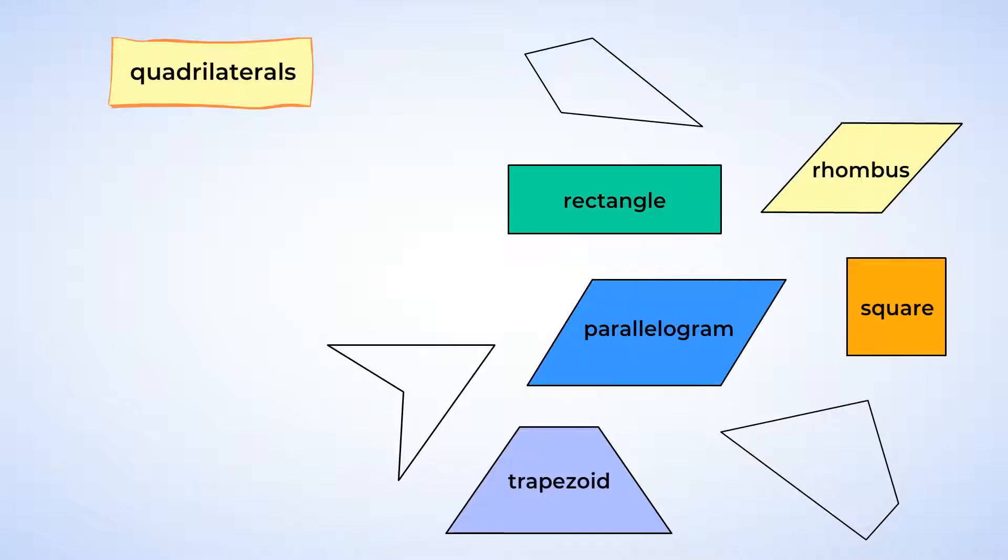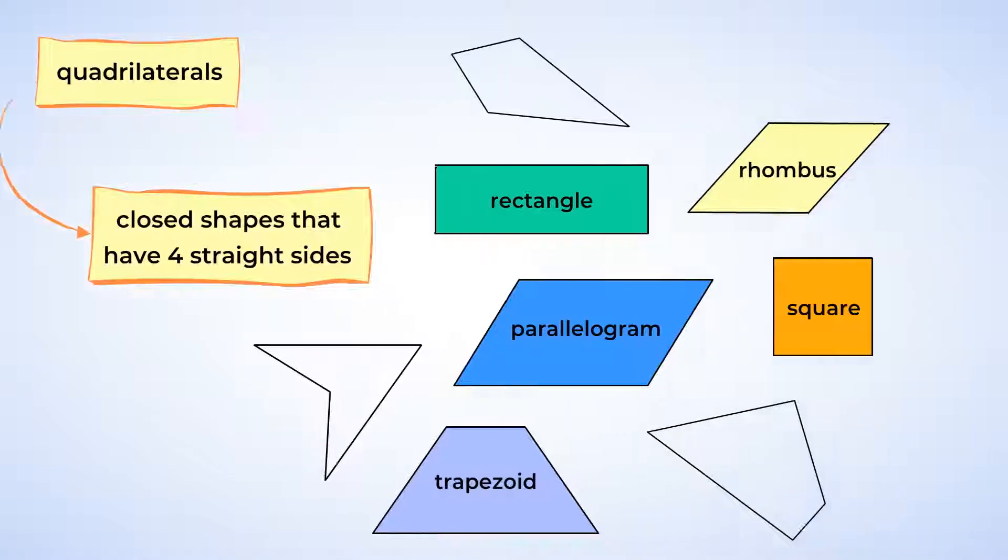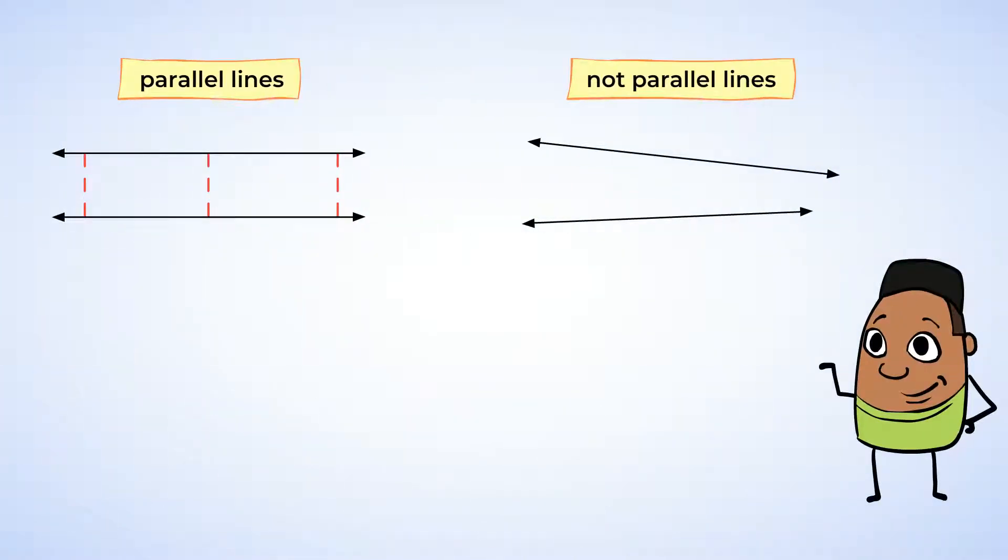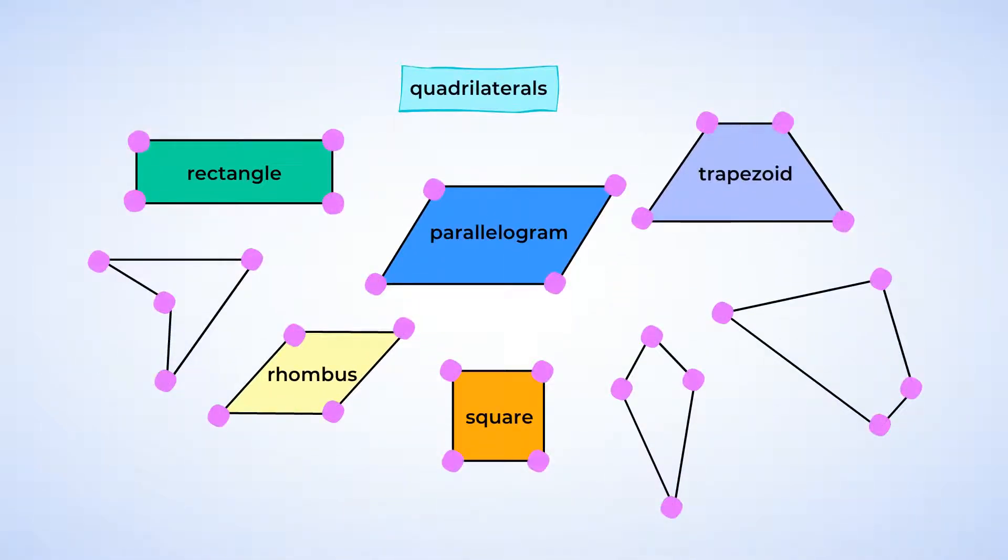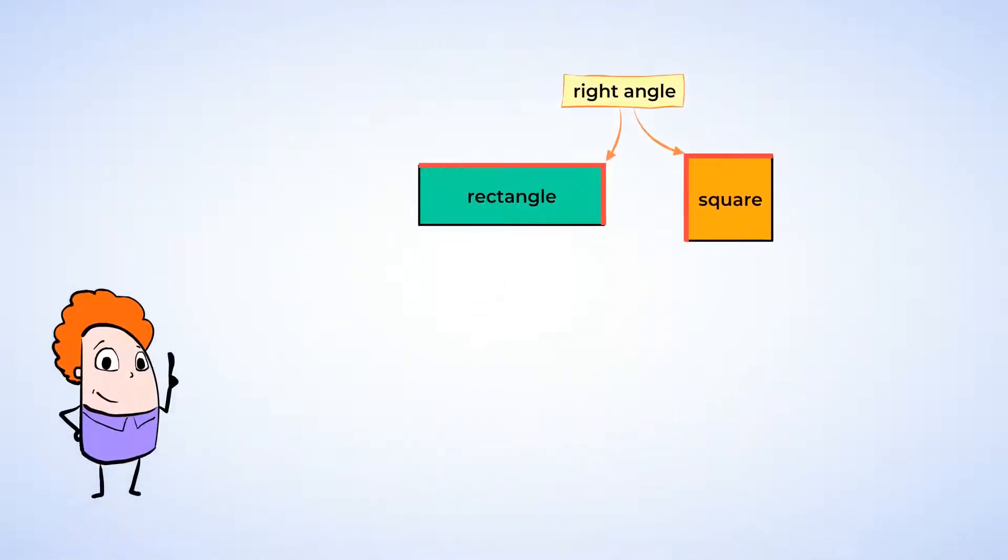First, they all have four sides. Some have parallel sides, meaning that the sides are always the same distance away from each other. Each point where the sides of a quadrilateral come together is called a vertex. Some have right angles that look like an L.